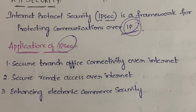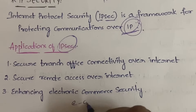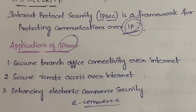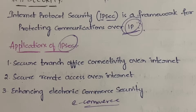The third application is enhancing electronic commerce security. You are buying products from e-commerce sites like Amazon or Flipkart and doing payment as well. The payment has to securely reach from your bank account to Amazon's bank account without going into anyone else's account. If you request a refund, it has to securely come from Amazon to your bank account — that also needs security, and IPsec is used for that.